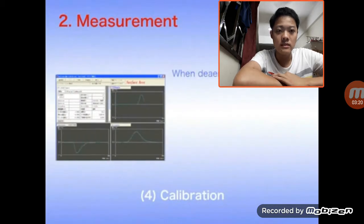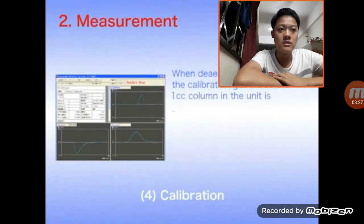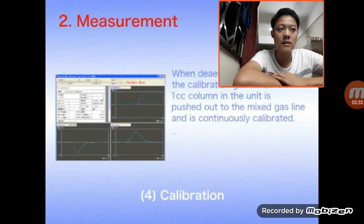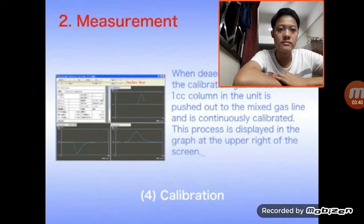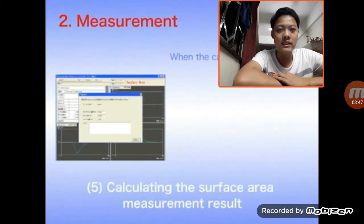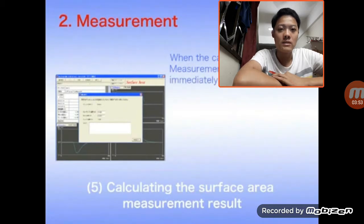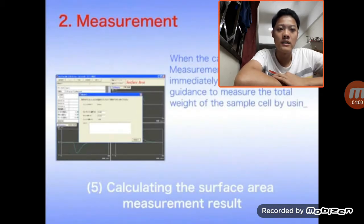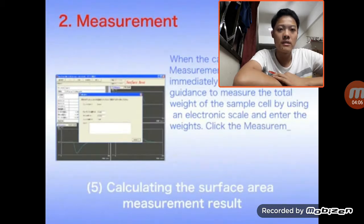Next is a calibration process. This process will show a graph displayed at the upper right of the screen. Lastly, when you finish the experiment, it will calculate the surface area measurement result, and you can get the sample cell result on the screen.